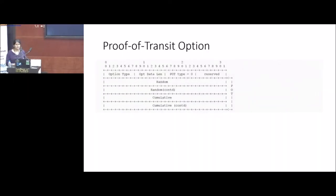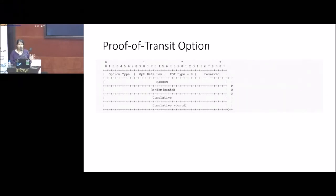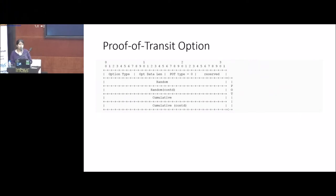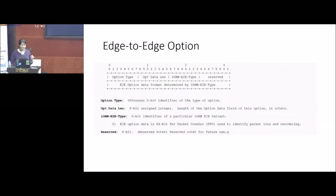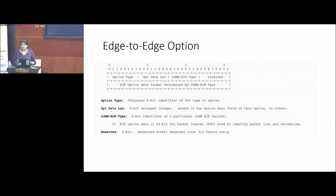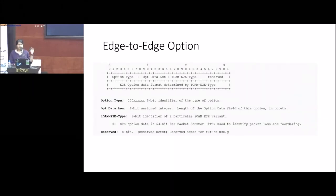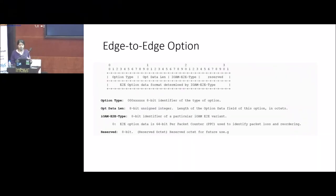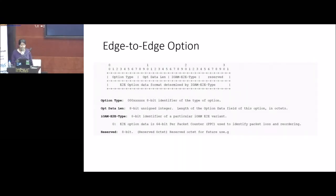The second option is for proof of transit and is not acted on by every transit node. The algorithm requires a 64-bit random number and a 64-bit proof of work value called the cumulative. This is also part of the data draft. Then there is the edge-to-edge type, which could be a sequence number or timestamps defining by when a packet needs to get out of your domain. We are defining one type of end-to-end data in the data draft currently in IPPM, and there could be more that come in, with an IANA registry defined for this type as well.